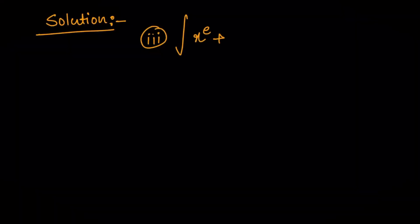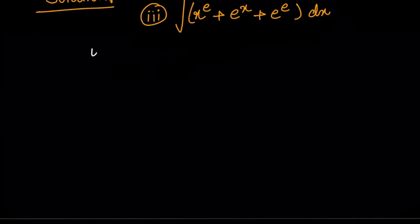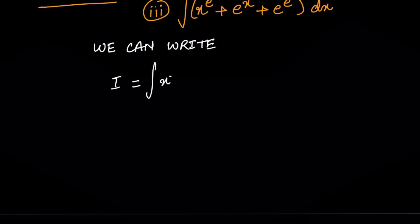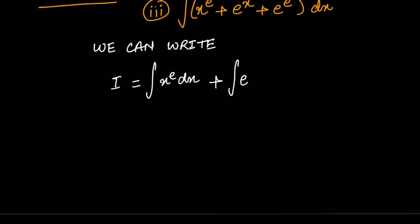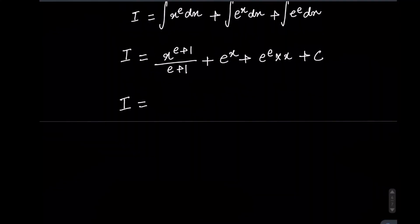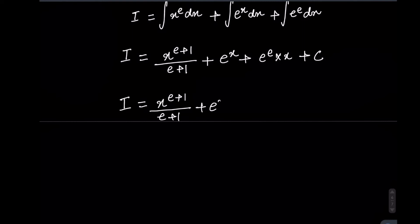The third question is: ∫(x^e + e^x + e^e) dx. We separate the three terms: ∫x^e dx + ∫e^x dx + ∫e^e dx. For x^e we use the x^n formula; for e^x the integral is e^x; and e^e is a constant, so its integral is e^e · x. The final result is: I = x^(e+1)/(e+1) + e^x + e^e · x + C.